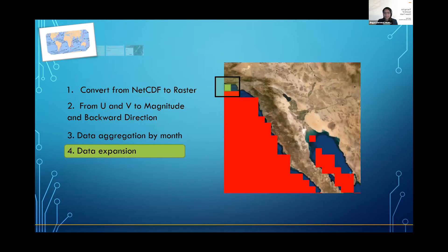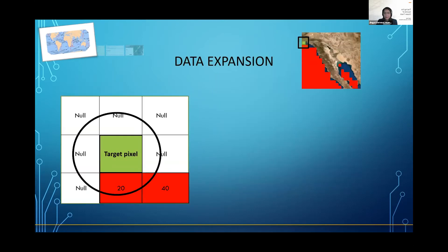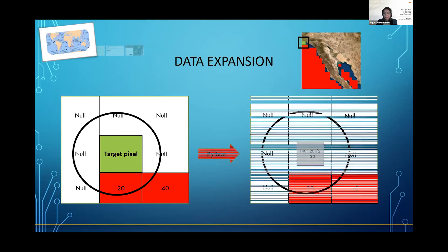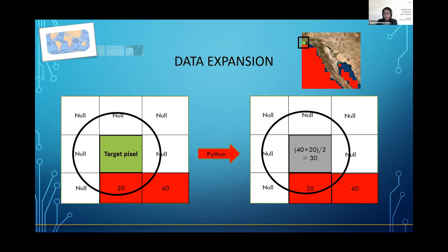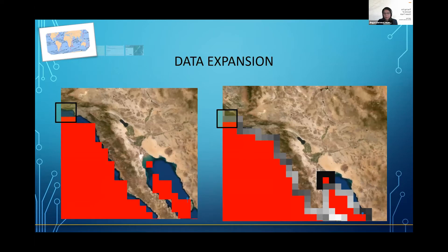The final step for preparing data is data expansion. The area covered in red is the area that has the ocean current data, but as we can see, the data is not covering most of the shoreline. Since we also want to study the source location of trash found on the beach, we need to do some data expansion to cover this area. The nearshore ocean current data can be estimated by using longshore current data from an area up to 40 kilometers offshore. As a result, the original data coverage can be expanded using the OSCAR data. The method to expand the data was replacing the known value of the target pixel by the mean value of its eight neighbors. After the expansion, the database now covers most of the shoreline.